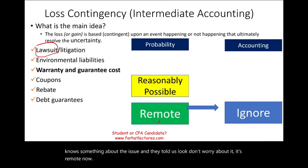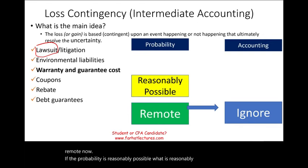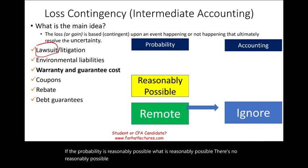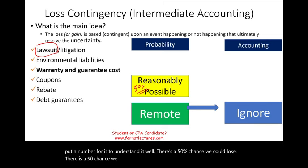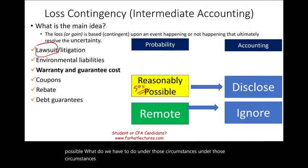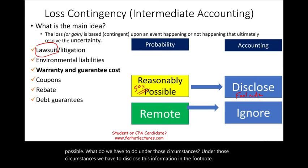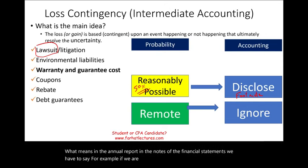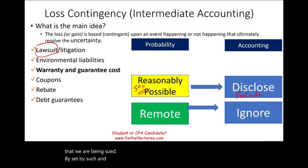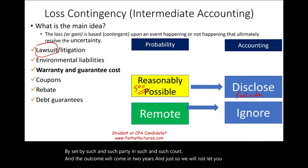If the probability is reasonably possible — there's no specific quantitative threshold, but think of it as roughly a 50% chance we could lose — then we have to disclose this information in the footnotes. In the annual report, in the notes to the financial statements, we would say something to the effect that we are being sued by such-and-such party in such-and-such court, and the outcome will come in two years. If it's reasonably possible, you disclose.